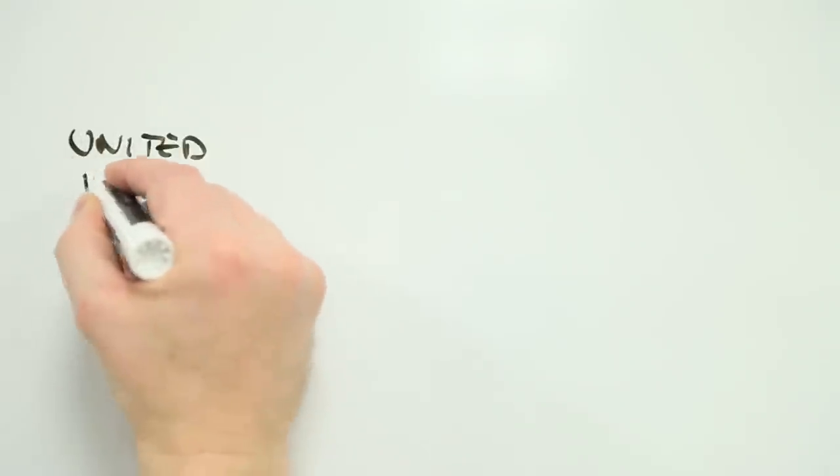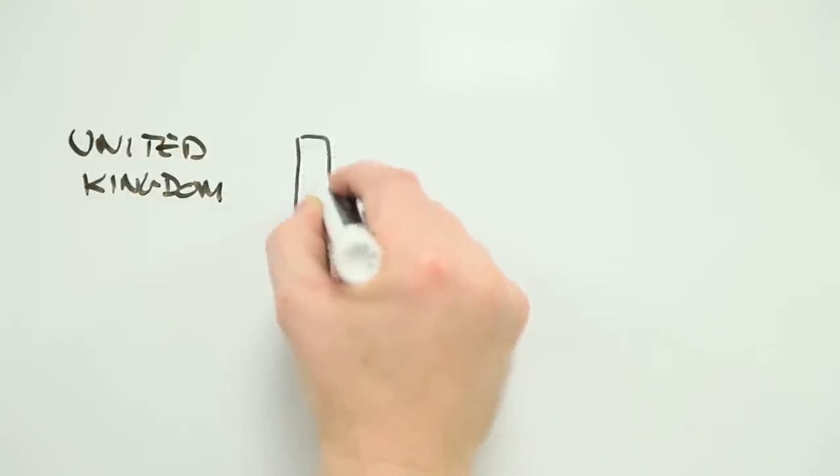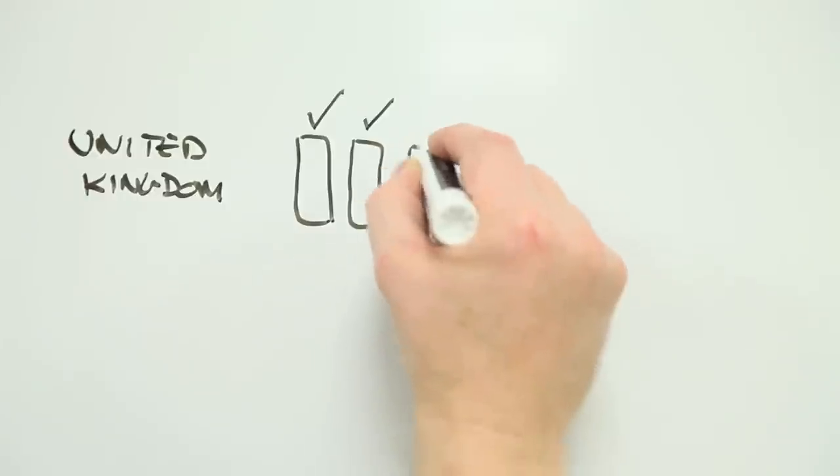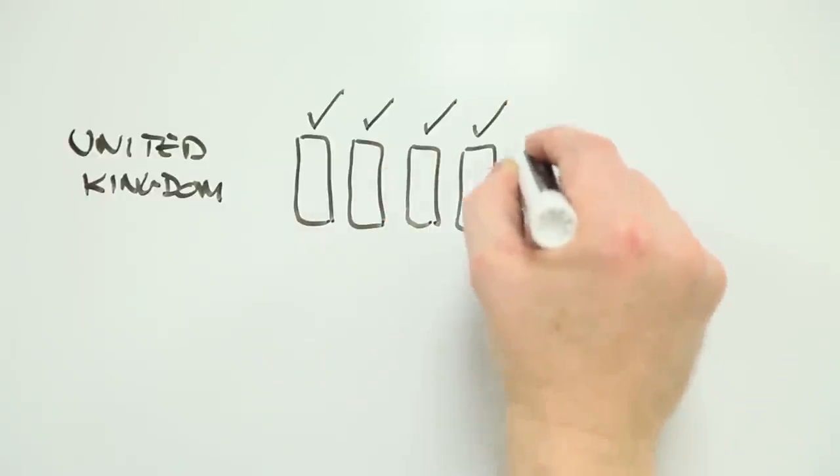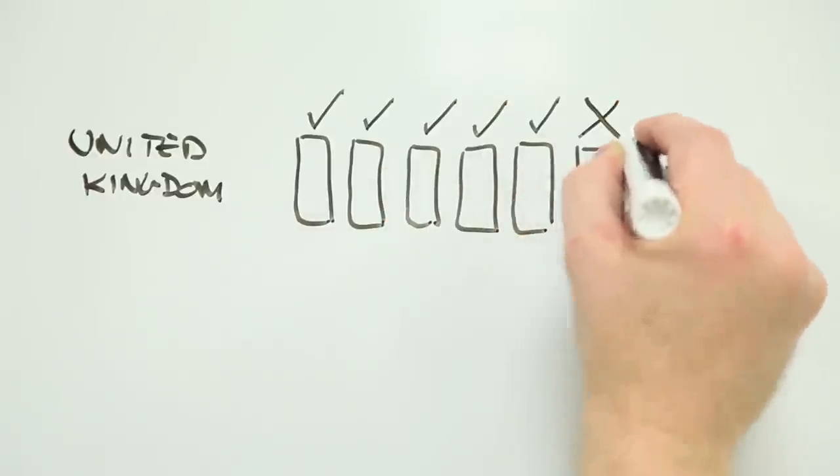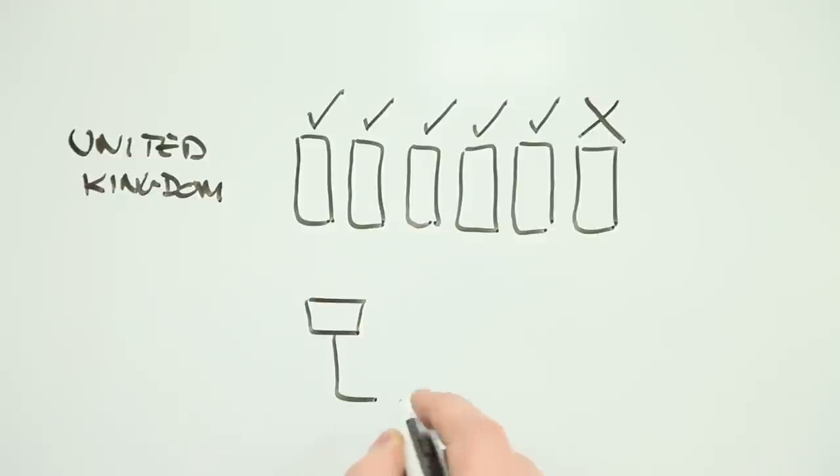In 2011, a study from the London School of Hygiene and Tropical Medicine revealed that one in six mobile phones in Britain is contaminated with fecal matter. In other words, they had poop on them.